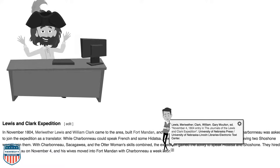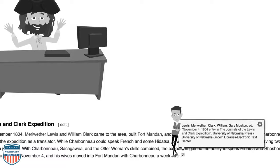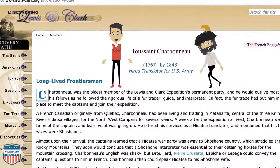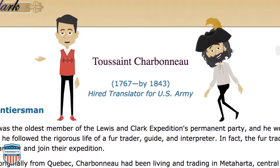Source number three reads: 'Lewis, Meriwether; Clark, William; Gary Moulton — November 4th, 1804 entry in the Journals of the Lewis and Clark Expedition.' This is a first-hand account and also a primary source — straight from the horse's mouth. I also found information on Toussaint Charbonneau at www.lewis-clark.org. Typically, if a web address has a .edu, .org, or .gov, it's usually a reliable source.